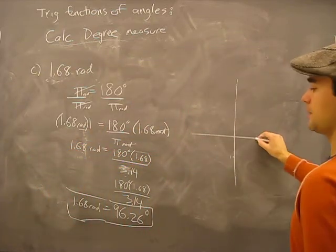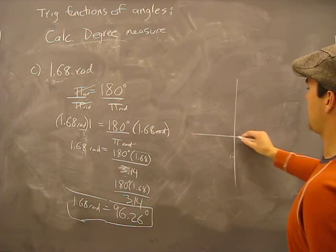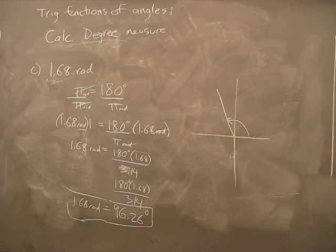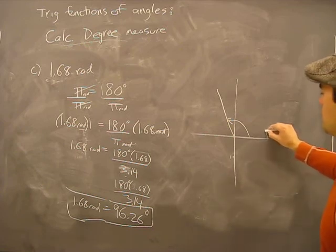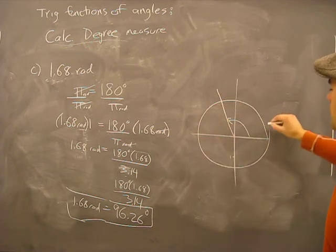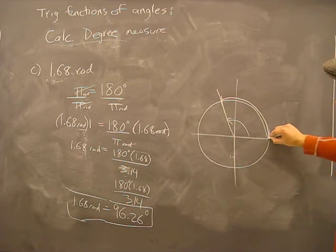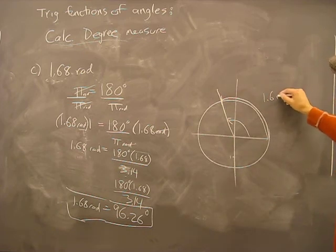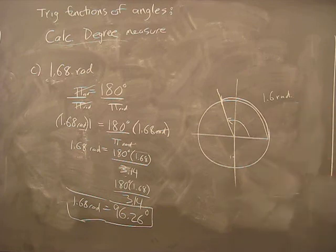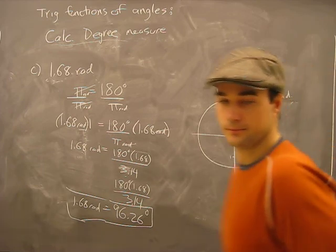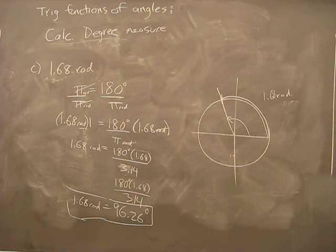Now on a circle, what that means is that at an angle of 96 degrees, if we were to draw a circle here, the length of this arc from here to here is 1.68 radians.